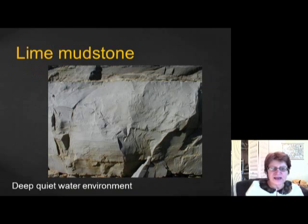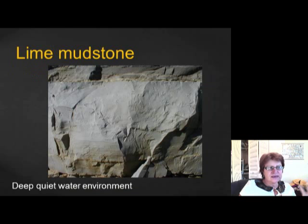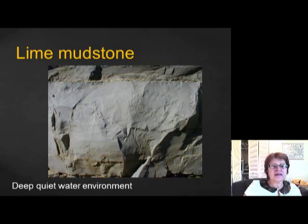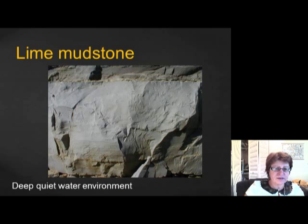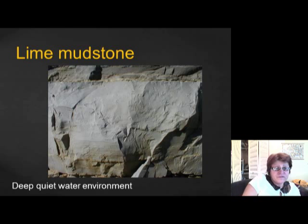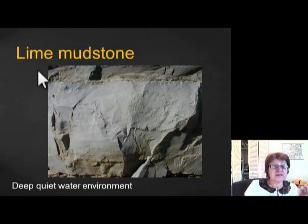The lime mudstone is the finest-grained carbonate, usually from quiet, deeper water. The dark color is very common if there was no oxygen. The lighter-colored example shown is shallower water. Either way, it still fizzes with hydrochloric acid because it's still limestone — the color just tells you whether it formed in deeper or shallower water.